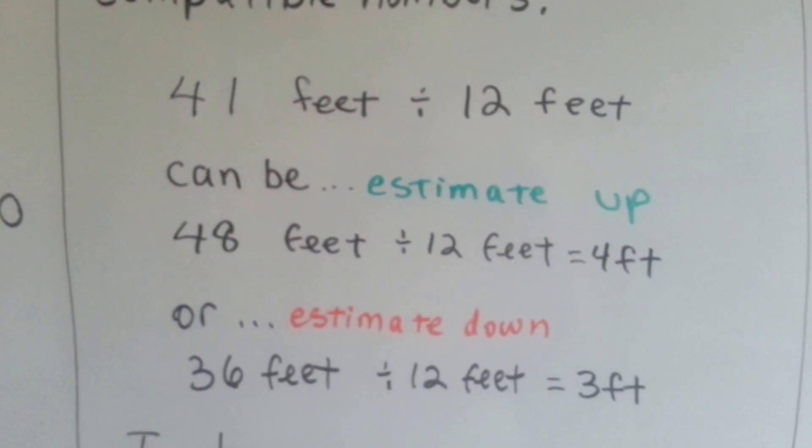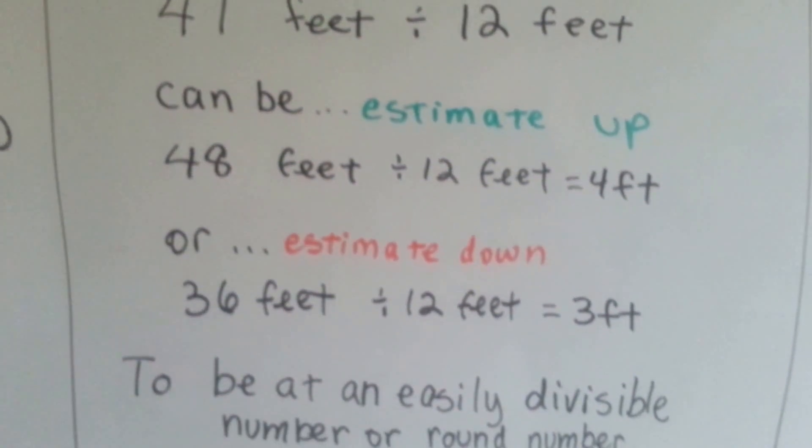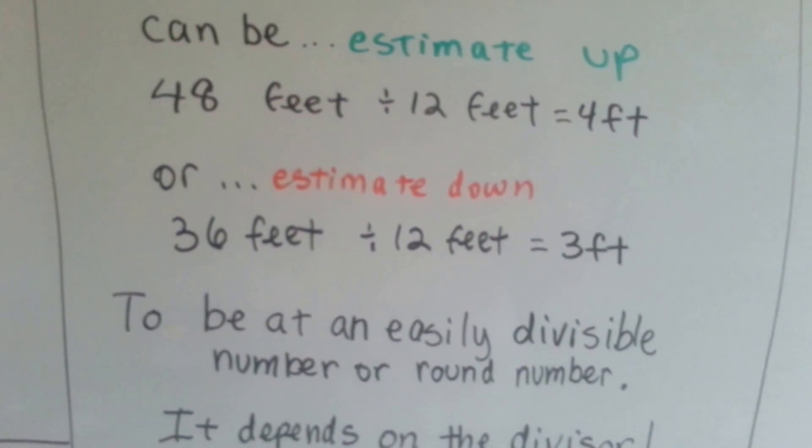Or you could estimate down because you're in between, you're at 41. And you could say 36 feet divided by 12 would be 3 feet. It's an easily divisible number or round number.